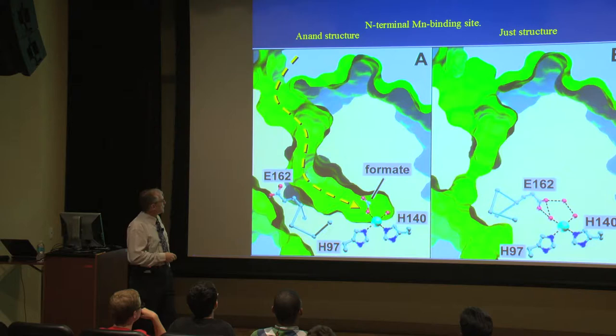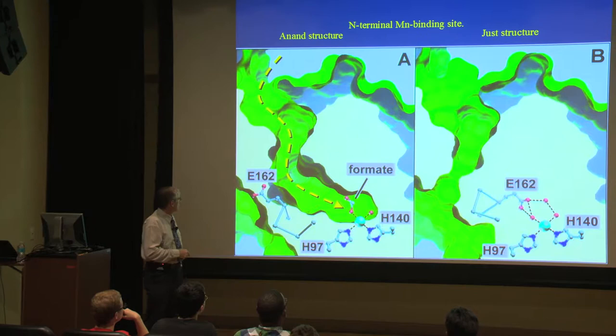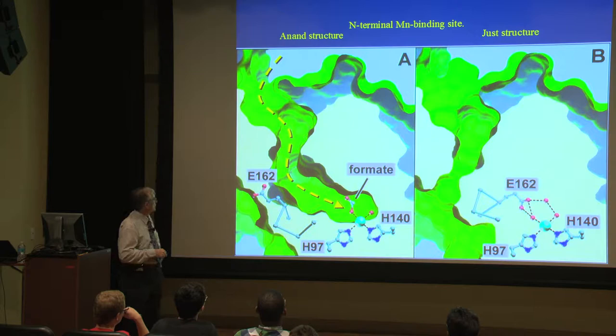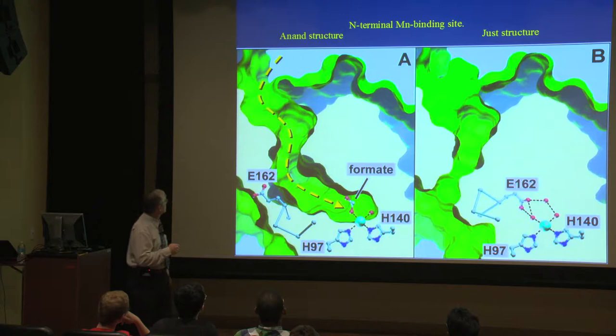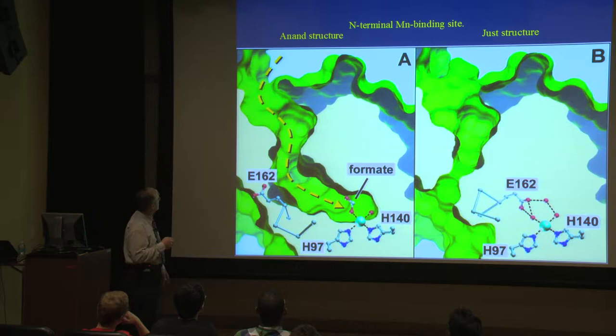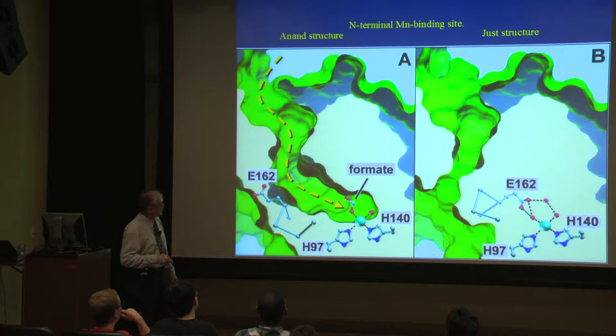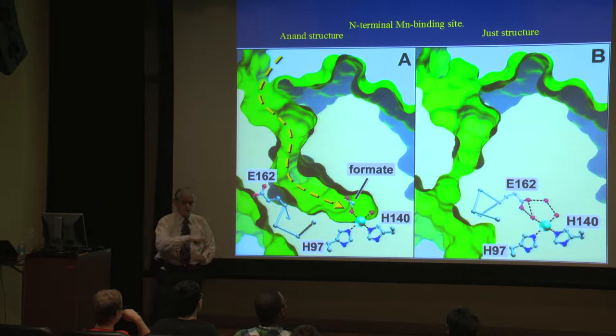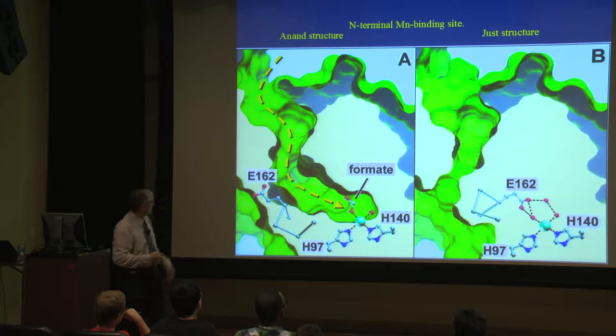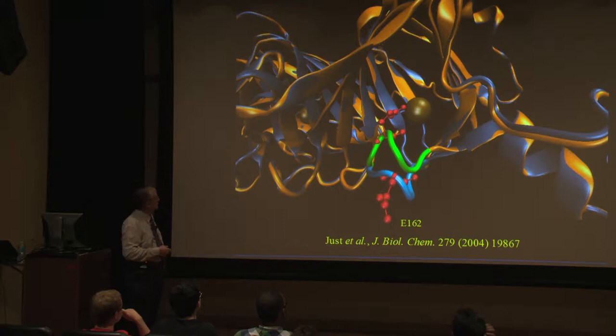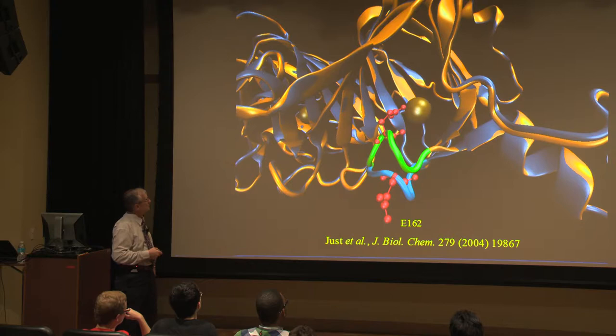The main difference between these structures, the Anand structure and the Wu structure, is a flexible loop that either opens a pathway. This picture shows the van der Waals radii of your amino acid side chains. What's in green is the van der Waals surface of that protein. There's a pathway all the way down from the outside world, from solution, to that N-terminal manganese where that formate molecule has been bound. In the second structure, that pathway is closed.